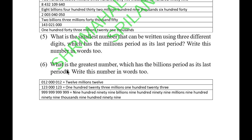Next: What is the greatest number which has the billions period as its last period? Write the number in words too. It should be 999,999,999,999.